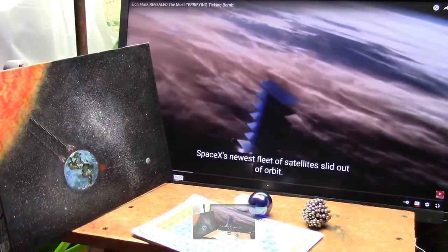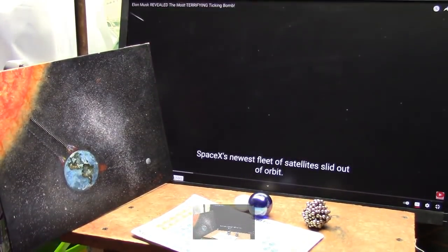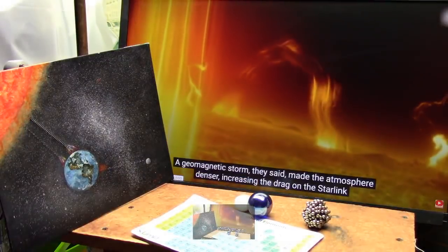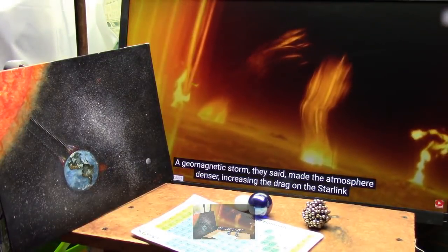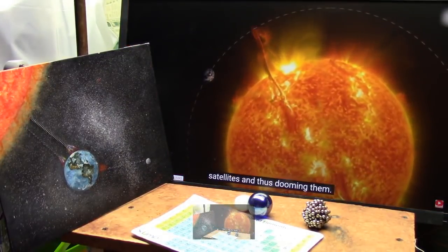This is right from Elon Musk, as far as I know. According to the company's online update, up to 40 of the 49 tiny satellites launched have either re-entered the atmosphere or burned up. A geomagnetic storm made the atmosphere denser, increasing the drag on the Starlink satellites and thus dooming them.